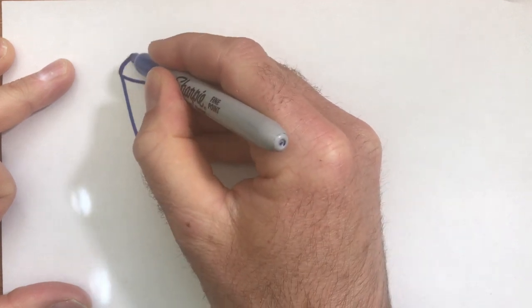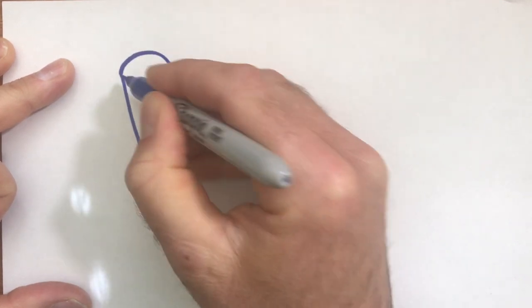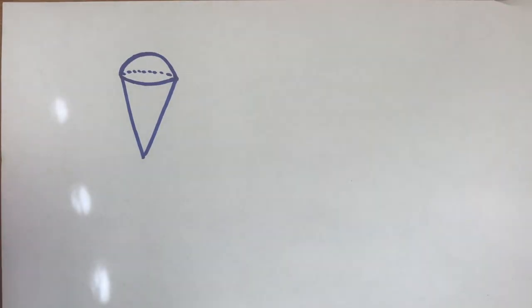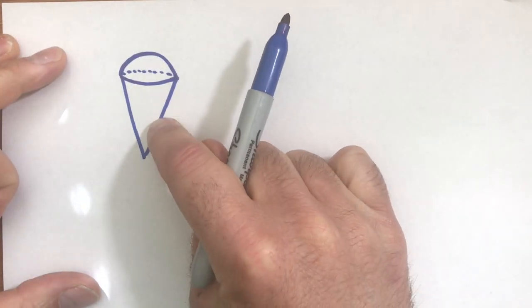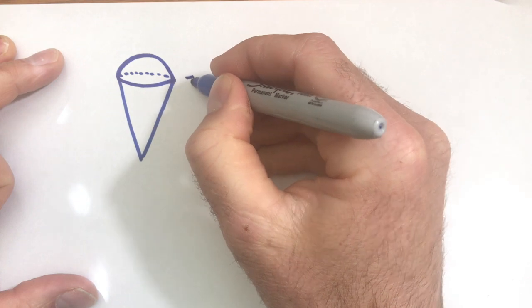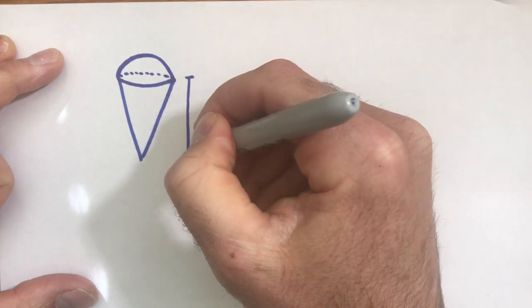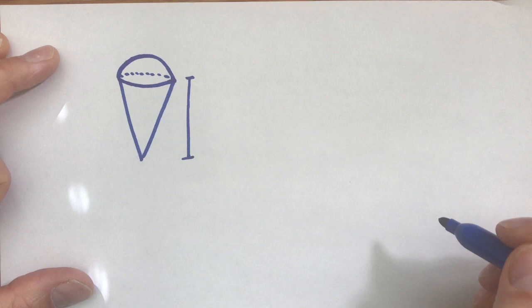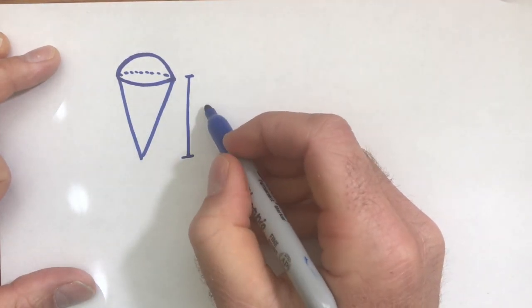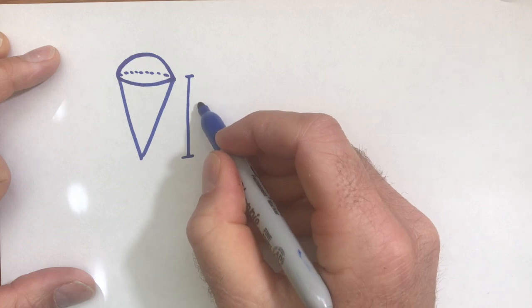And then on top we have a scoop of ice cream. So what we have here is basically a cone and half of a sphere. We're gonna say the height of the cone without the ice cream, we'll say is 10 centimeters.